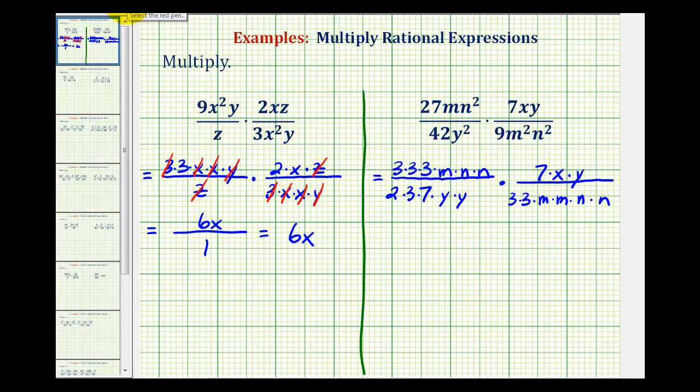And now we can simplify out all the common factors. Three over three simplifies to one, three over three simplifies to one. Notice how we also have a common factor of m, and we have two factors of n common here and here. Here we have seven over seven that simplifies to one, and we have y over y that simplifies to one.